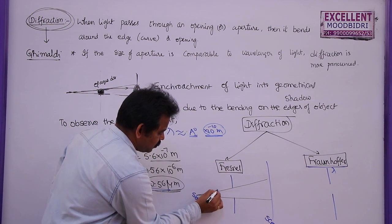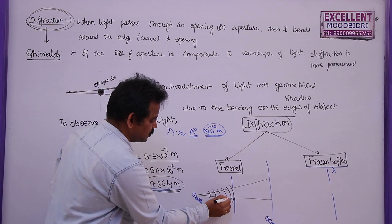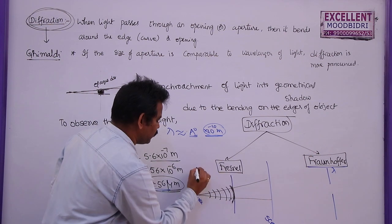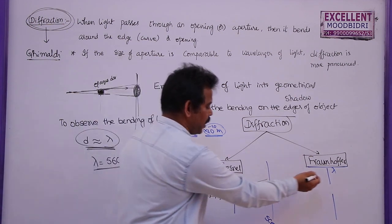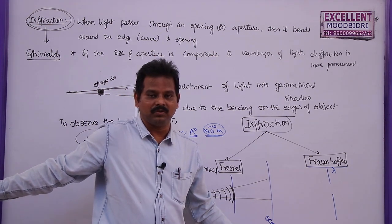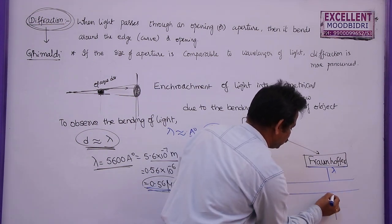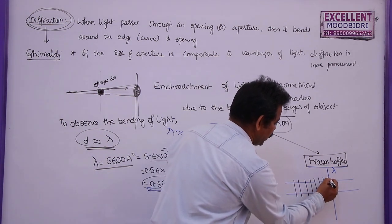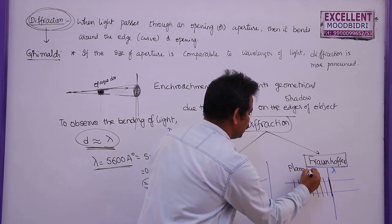In Fresnel diffraction, a circular or spherical wavefront is incident on the slit. Fresnel used spherical wavefronts to explain the diffraction effect. But in Fraunhofer diffraction, the light waves are starting from a large distance, so these wavefronts are plane wavefronts. We assume a plane wavefront is incident on the slit.